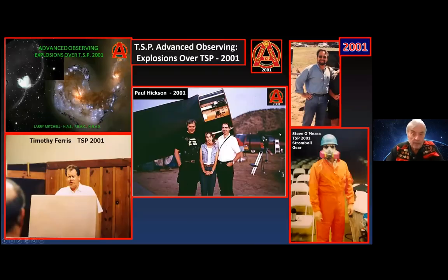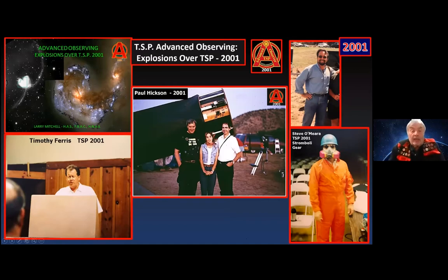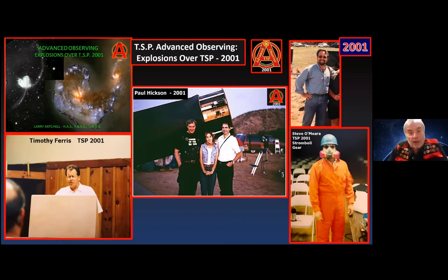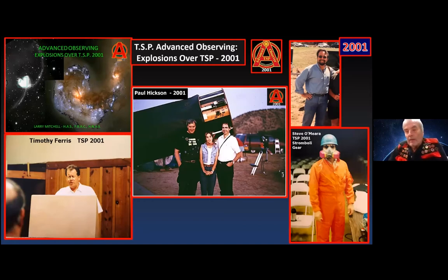In 2001, the advanced observing theme was 'Explosions over TSP.' We had some excellent speakers. Timothy Ferris — a noted author of several astronomy books — gave a very good talk. Paul Hickson, noted for his Hickson 100 compact galaxy clusters and for inventing a spinning mercury telescope in British Columbia, made his second visit to TSP. Steve O'Meara, a good friend, was also there.